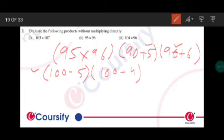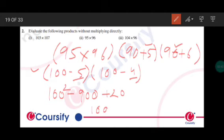So by choosing this and using the same property, we'll have 100 squared minus 5 plus minus 4 is minus 9 into 100, that is minus 900, and this into this will give us plus 20. So this will become 10,000 minus 900 plus 20 equals 9,120.